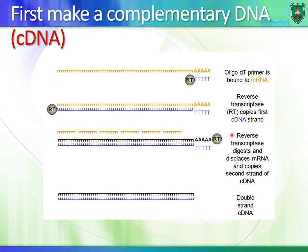Then the reverse transcriptase also degrades the messenger RNA and synthesizes the second strand, going backward again. Now we have double-stranded DNA. Notice something really important: the ratio between messenger RNA and its cDNA is one-to-one. In other words, if there are 10 copies of messenger RNA in a cell, you make 10 copies of cDNA. If there are 100 copies of messenger RNA, you have 100 copies of cDNA. If you have 1000, you have 1000 as well. So the ratio is one-to-one.